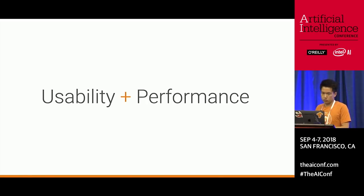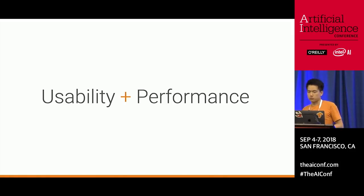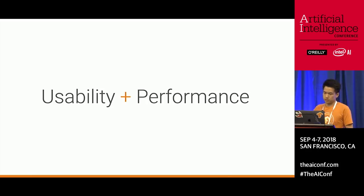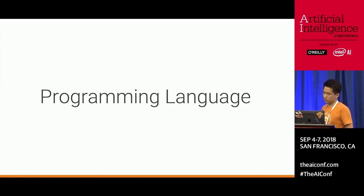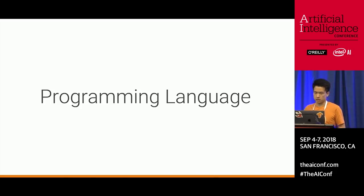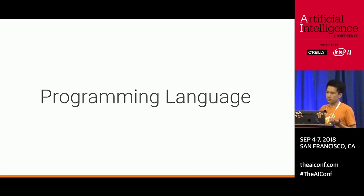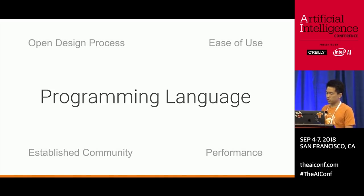Can we combine usability and performance? What we are building combines the ease of use with high performance for your machine learning code. But to do that, we have to do something more than just writing a new library — we have to innovate in the programming language. Machine learning is so important to us that we're willing to adapt the programming language and the entire software stack. Since we need first-class machine learning capabilities and primitives, we need not only ease of use and high performance, but also an open design process driven by an established community for the language.